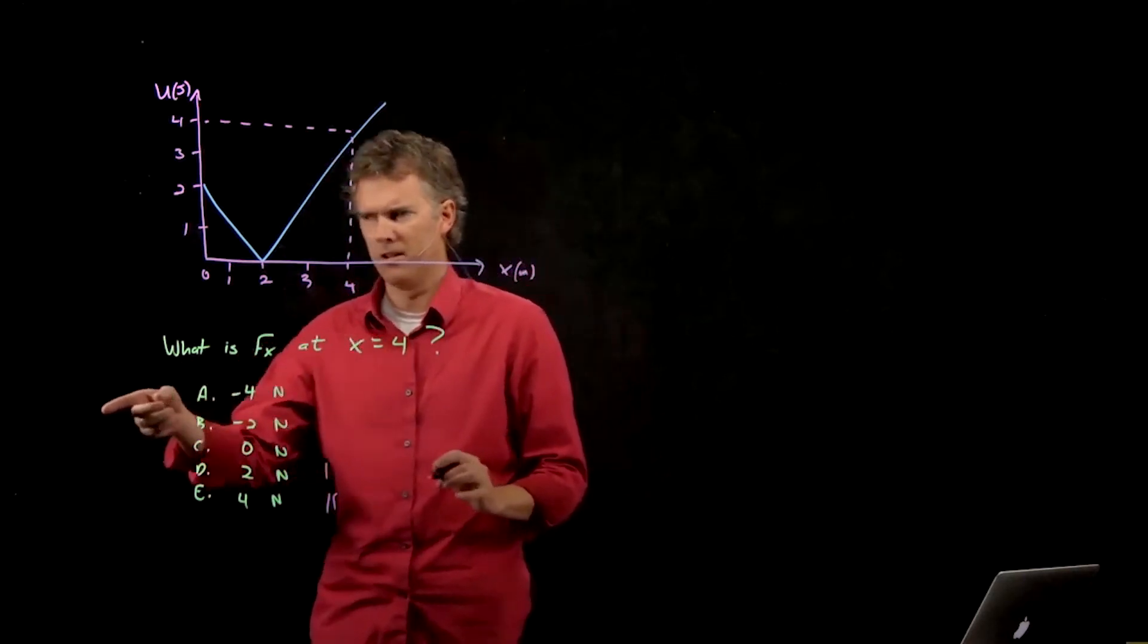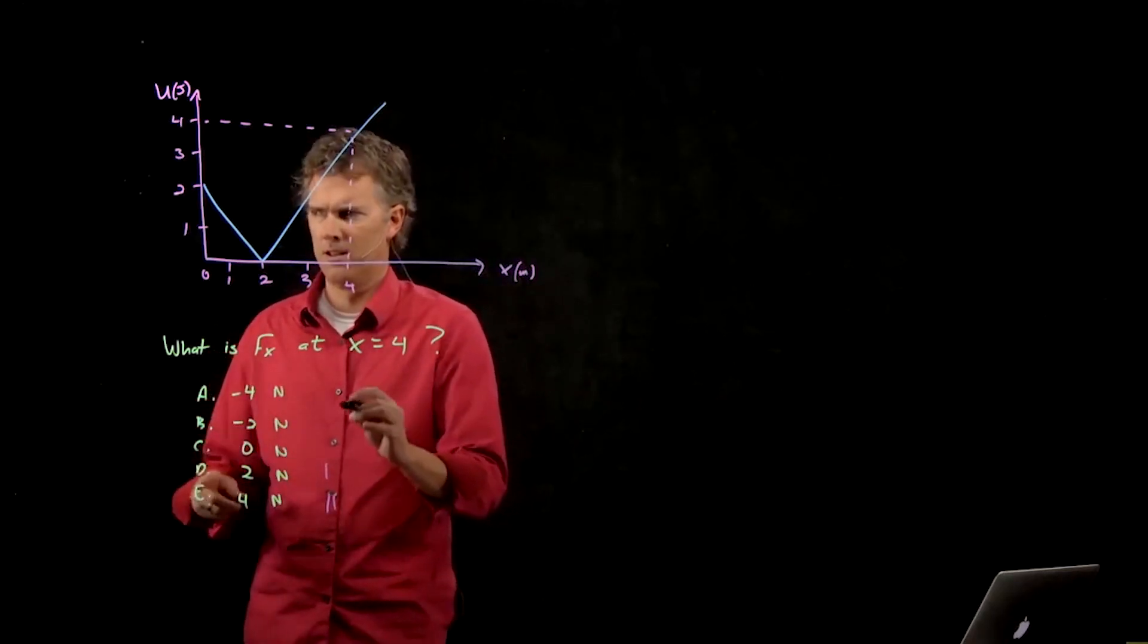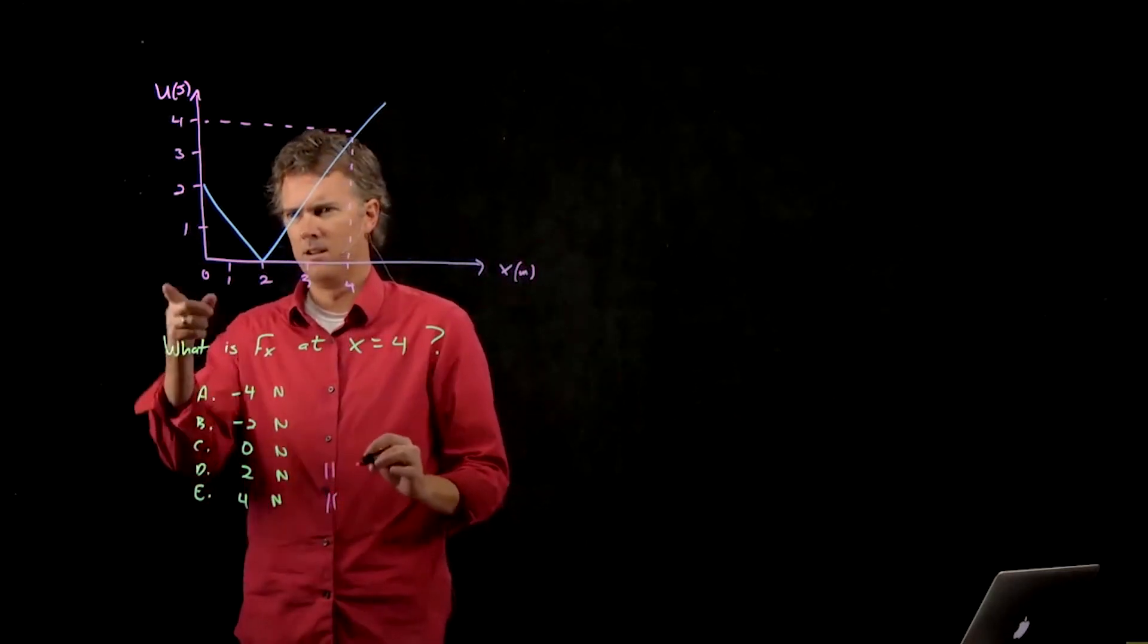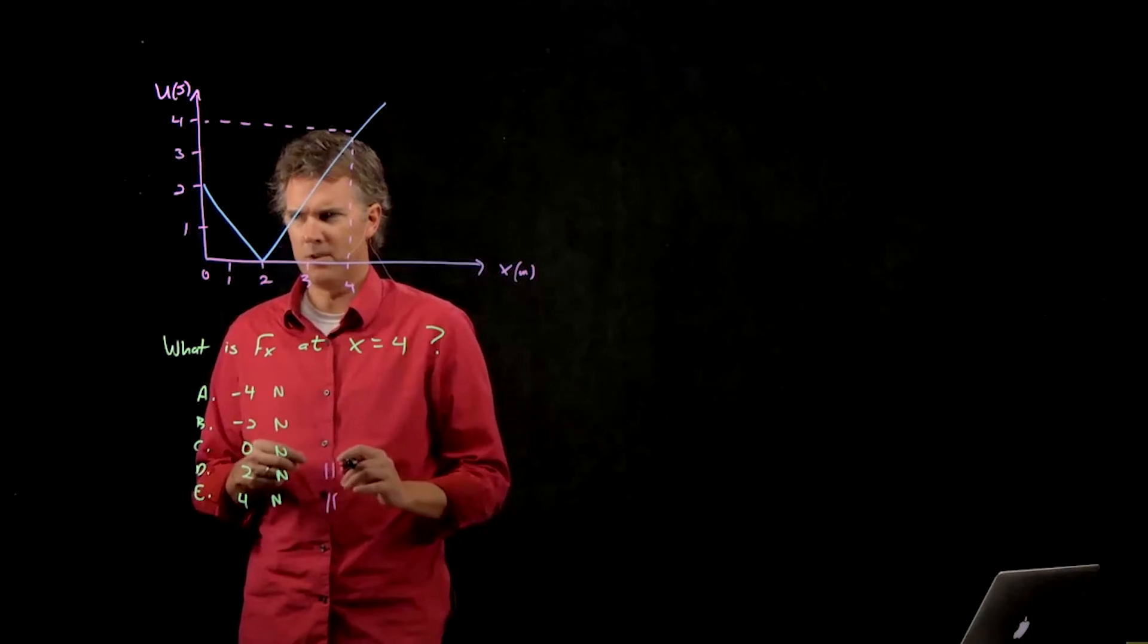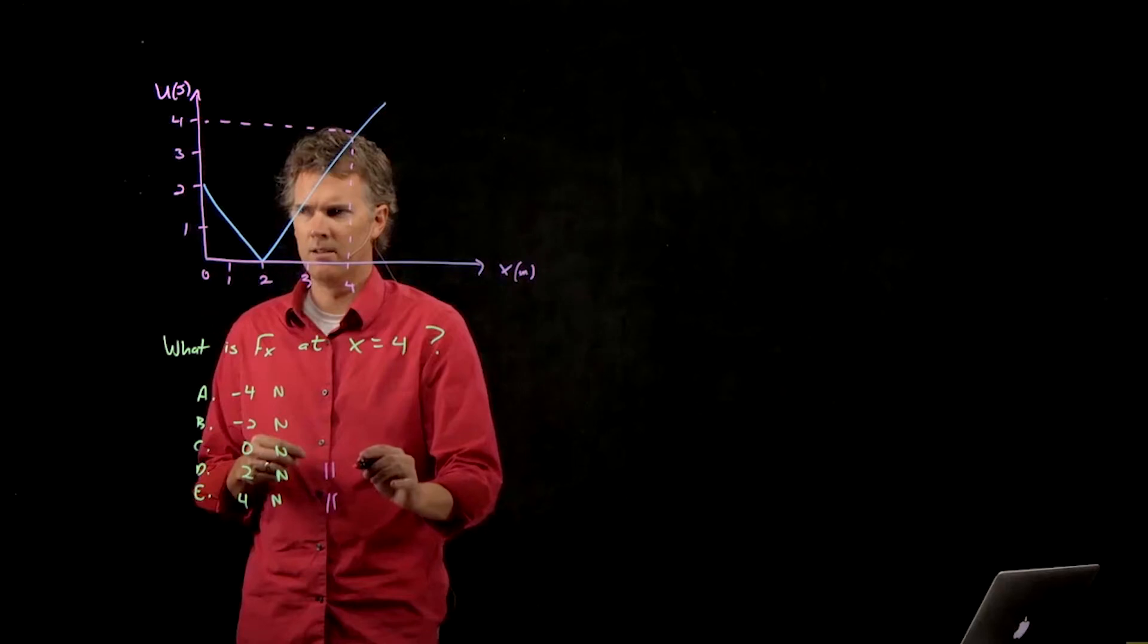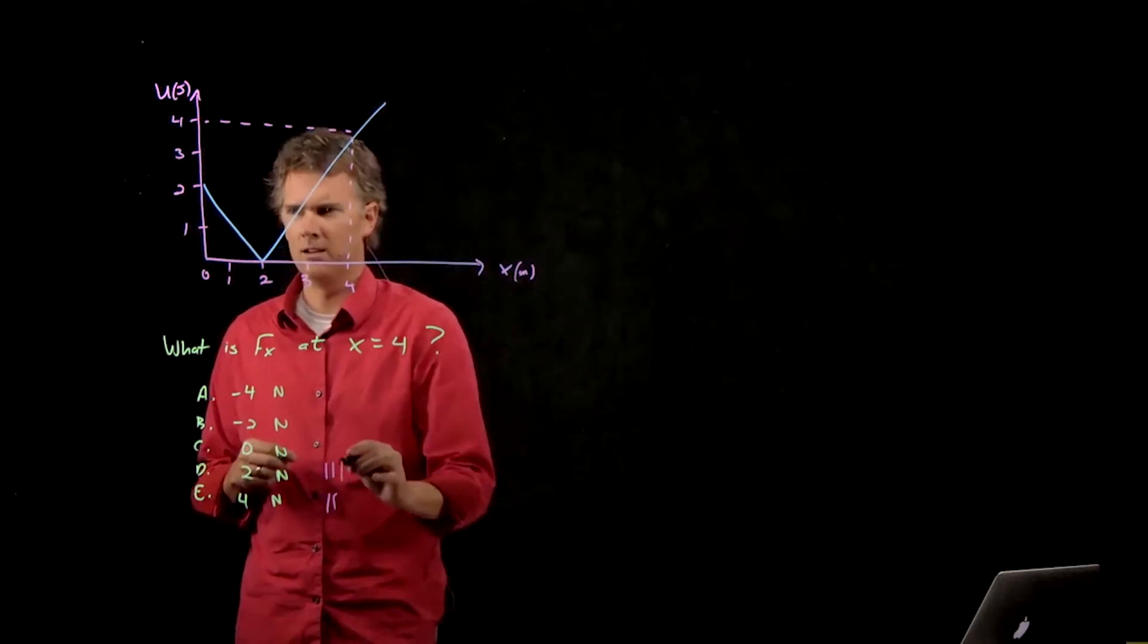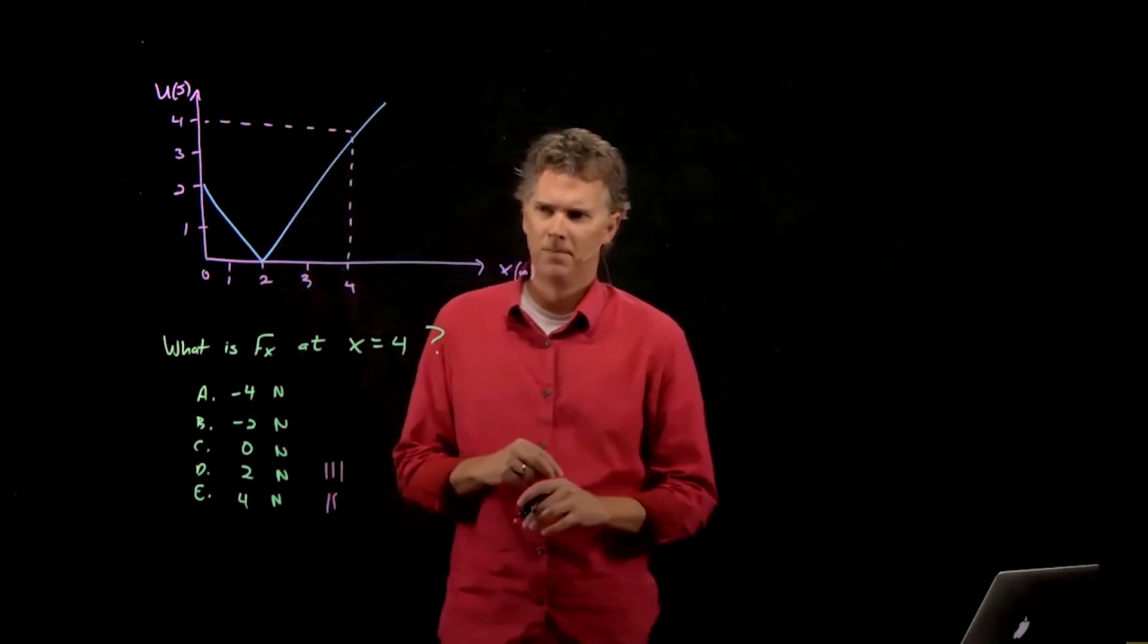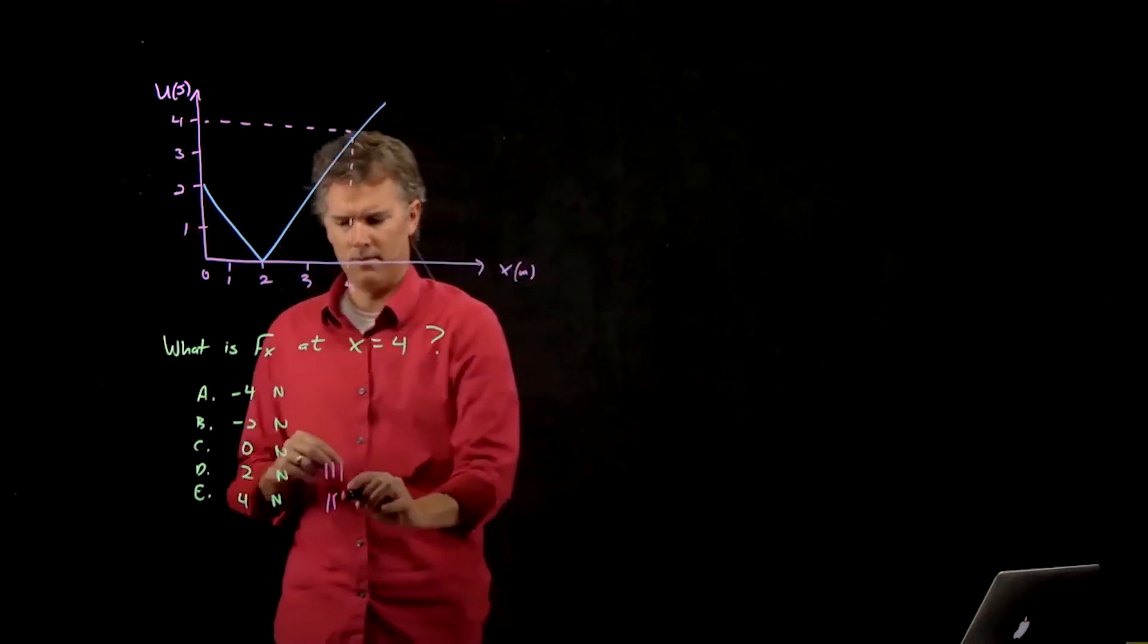Table number 4 right here, what did you guys think? D? Okay. Table number 5 right there, what did you guys think? E? D as in dog. Last table? E? Okay.